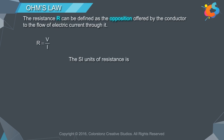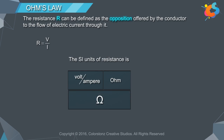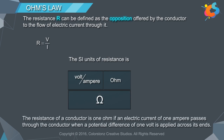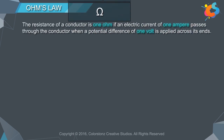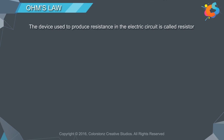The SI unit of resistance is volt per ampere, which is called Ohm, in the honour of the scientist who discovered it. It is denoted by the Greek alphabet Omega. The resistance of a conductor is 1 Ohm if an electric current of 1 ampere passes through the conductor when a potential difference of 1 volt is applied across its ends. The device used to produce resistance in the electric circuit is called a resistor.